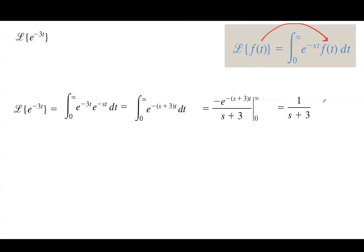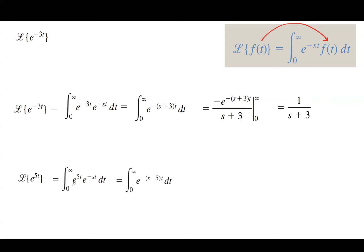Let's take a look at another example. Suppose our goal is to calculate the Laplace of e to the power 5t. e to the power 5t is your function f of t that you plug into the integral. So we have the improper integral of e to the power 5t times e to the power negative st dt. We're going to combine the exponents because we have the same base, so you end up with e to the power (5 minus s) times t dt.